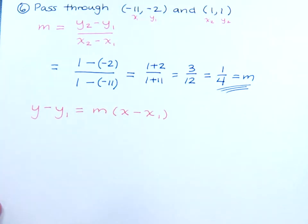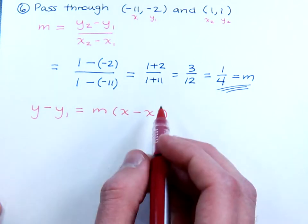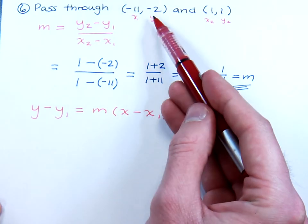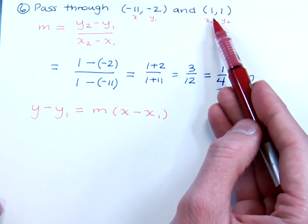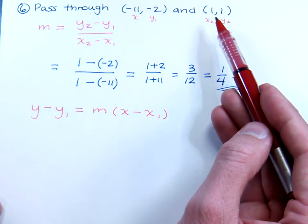Now this is great because you already have the slope, because we just found it, and you have a point that you go through. Now you can choose to use either negative 11, negative 2, or to use the ordered pair 1, 1. I'm probably going to go for 1, 1 because the numbers are smaller.